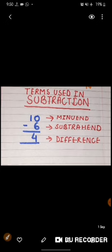And the answer we get after the subtraction is called difference. So the answer here is called difference. The first term we learned about is minuend, second is subtrahend, and the third one is the answer which is known as difference.